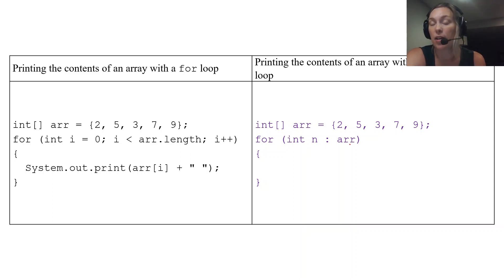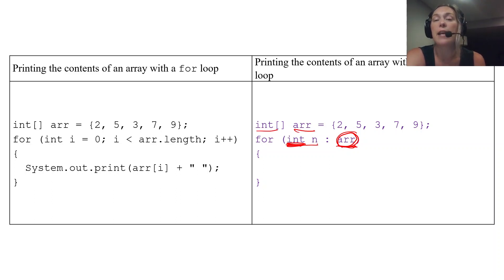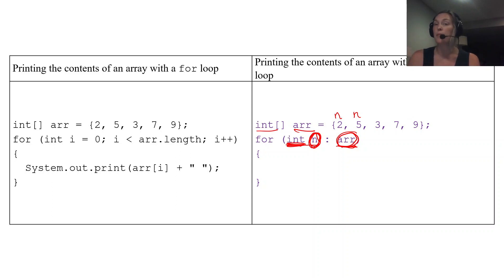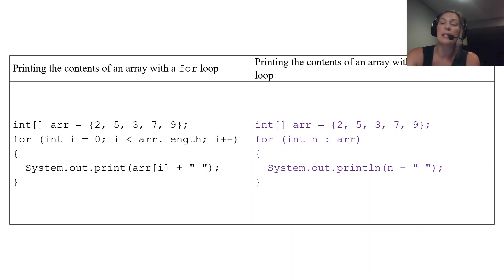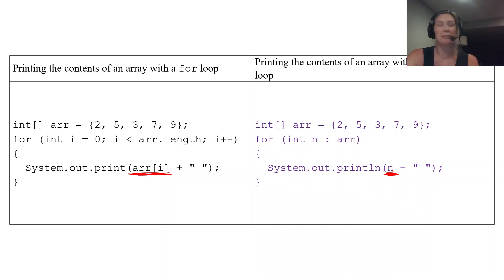With the enhanced for loop, we write 'for (int n : arr)'. Here arr is the array we're traversing, int is used because arr is an array of integer values, and n is our local variable. The first time through, n will be 2; the second time through, n will be 5, and so on. Inside the loop, we use statements with n. To print the contents, we simply print n, since each time through n becomes a different number from the array.